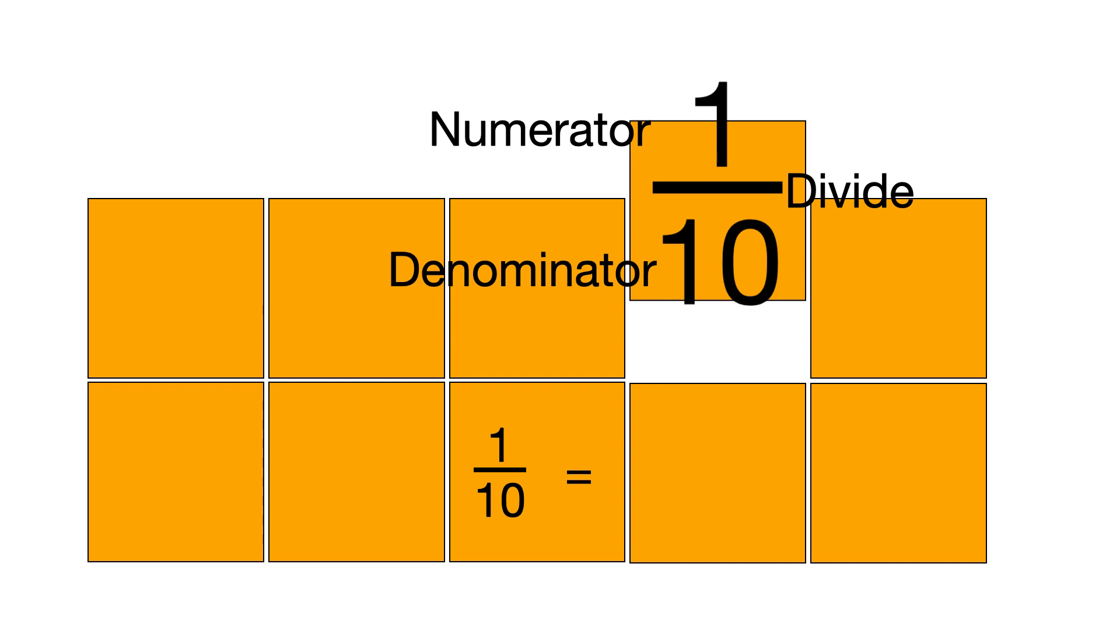So one tenth actually means one divided by ten, which makes sense when we have been finding tenths by chopping shapes into ten equal pieces.